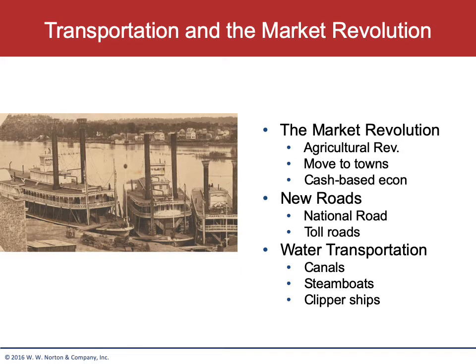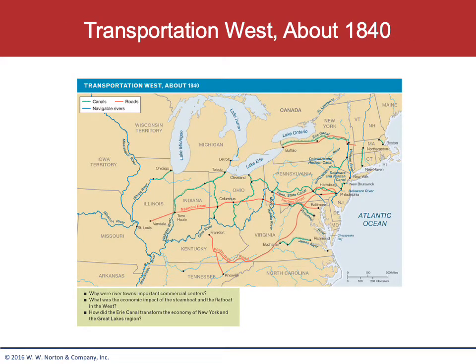Looking at the transportation map, it's important to notice how much road and canal construction was going on in the United States — but it was almost exclusively in northern states. This is the beginning of a troubling trend: the north was clearly taking advantage of these innovations and building infrastructure that the south was not.